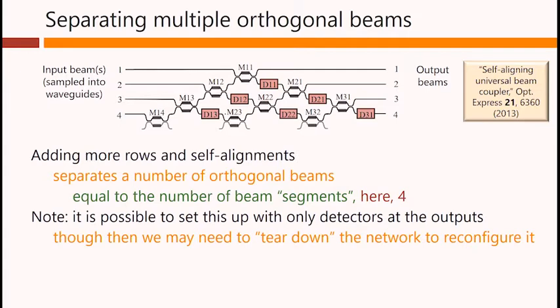Note, incidentally, it's possible to set this up with only detectors at the outputs, instead of these embedded detectors, though then we may need to tear down the network to reconfigure it. But we could still run with only detectors at the outputs to perform this kind of self-configuration.